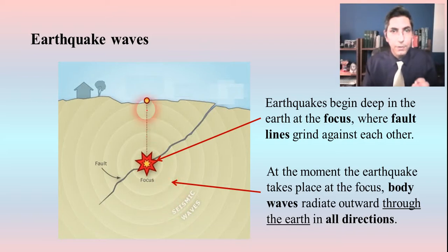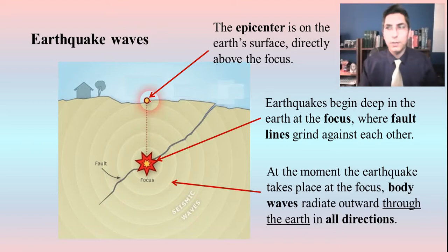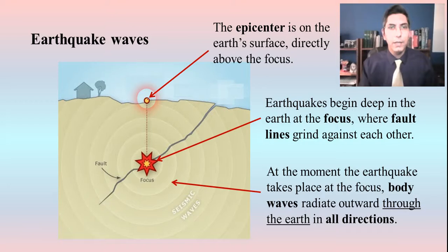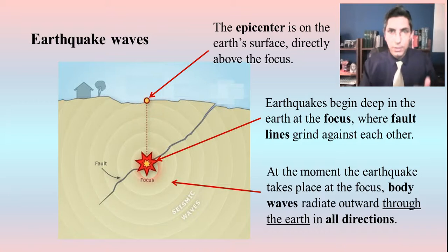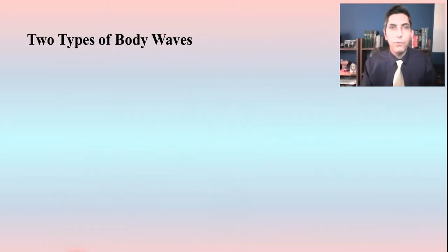Some of those body waves go up to the surface. The epicenter of an earthquake is the point on the earth's surface that's directly above the focus of the earthquake. So the focus is deep inside the earth, and the epicenter is on the earth's surface — that's the key difference between the two.